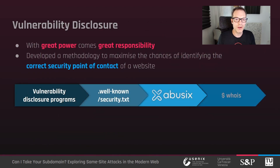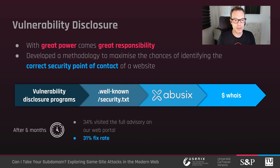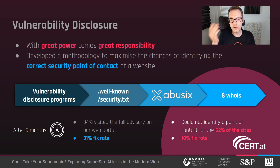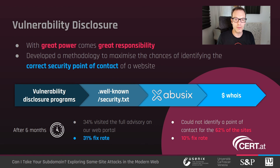With such great power also comes great responsibility. So we orchestrated a vulnerability disclosure campaign to notify all the affected parties, relying on multiple sources to automatically extract security points of contact for the vulnerable sites. Six months after the disclosure, 34% of the informed parties visited the full security advisory on our website and 31% of the subdomains were fixed. Unfortunately, we could not identify a point of contact for the majority of sites, so we contacted our national CERT, which agreed to disclose the vulnerabilities on our behalf. The remediation rate in this case was lower, reaching only 10% of the affected subdomains.